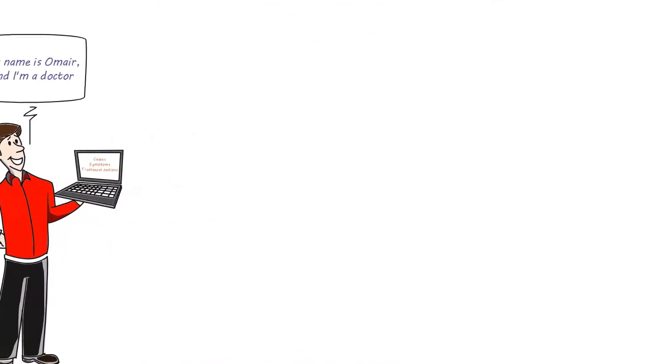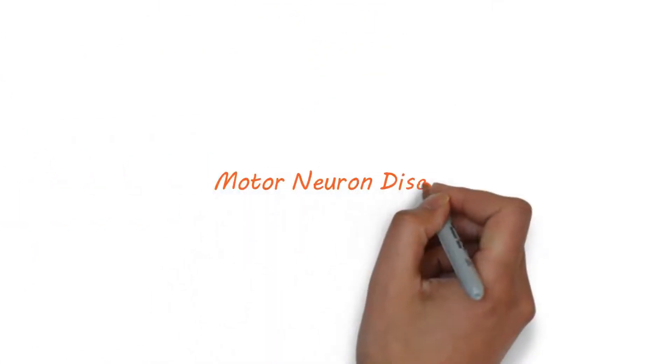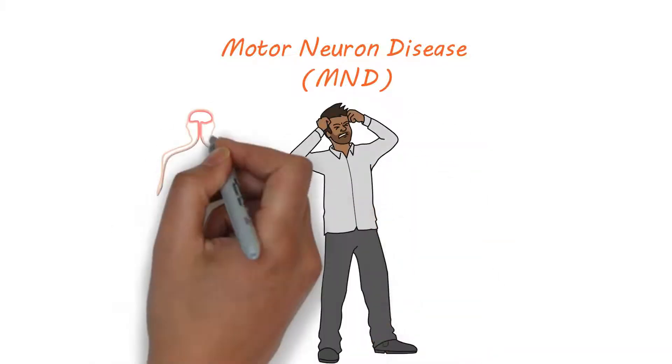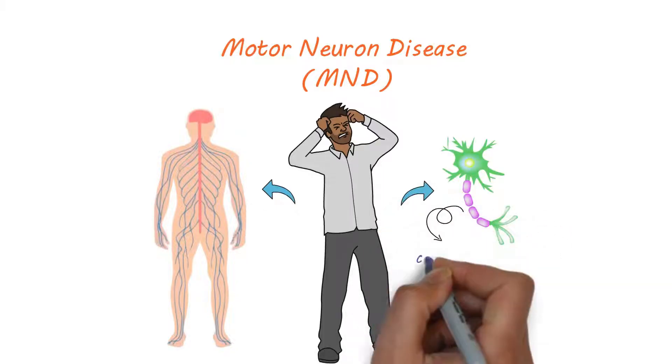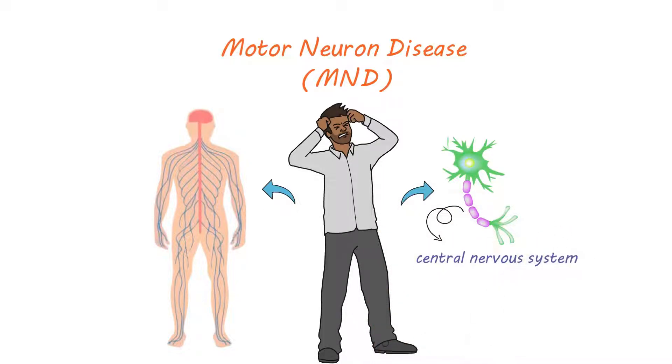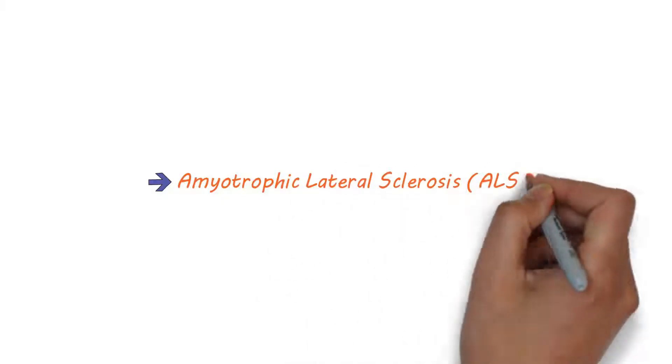So, let's get started. Motor neuron disease, MND, is a progressive neurological disorder that affects the nerves in the body that control movement. These nerves are called motor neurons and they're located in the central nervous system, which consists of the brain and spinal cord. The most common type is known as amyotrophic lateral sclerosis, ALS.